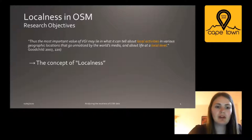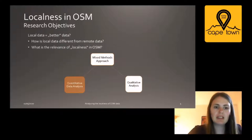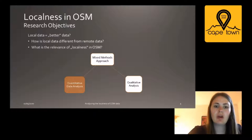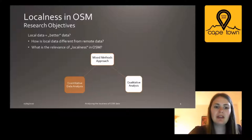Localness is first of all only an attribution brought to VGI from the academic debate. Local expertise operates as a claim to truth of VGI. In contrast to conventional geodata whose truth claim is based on professional and technical expertise, VGI is often legitimized by its authenticity due to its localness. Although localness is accepted as a central quality feature of VGI, it is hardly taken into account for its evaluation.